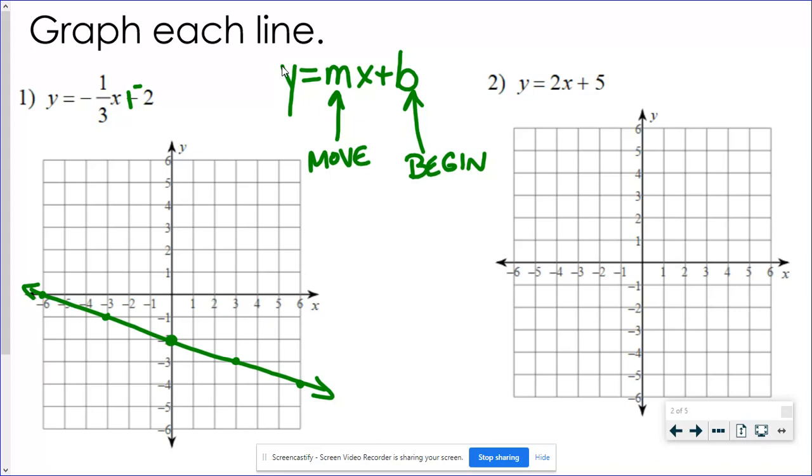And then you get your line. For number 2, this is starting at positive 5. My slope looks just like a 2, but I need it to be a fraction, so 2 over 1.